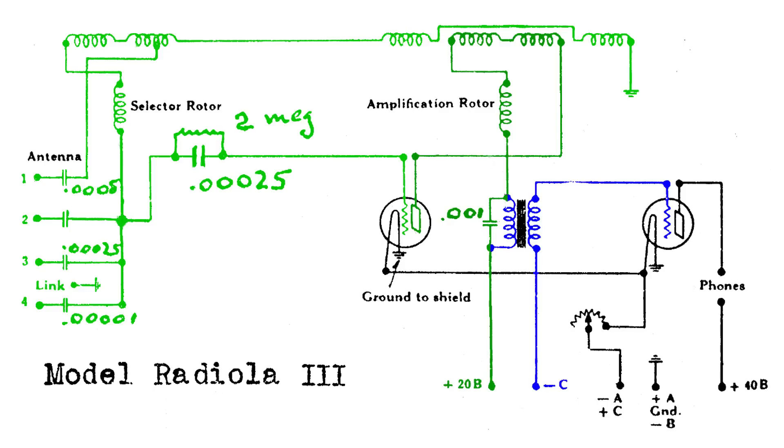Now this audio signal gets magnetically coupled over to the secondary of the audio transformer, which gets applied to the next WD-11 grid. This tube amplifies it enough to drive headphones.